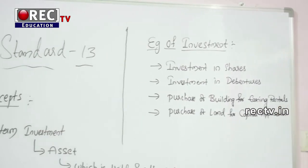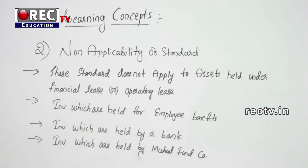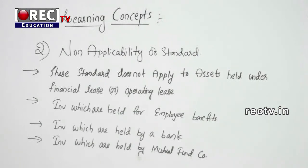The second concept is non-applicability of AS 13. This standard does not apply to: assets held under financial lease or operating lease (covered by AS 19), investments held for employee benefits (covered by AS 15), investments held by banks, and investments held by mutual fund companies or asset management companies.